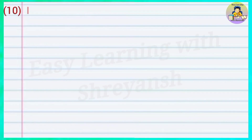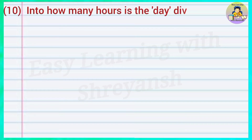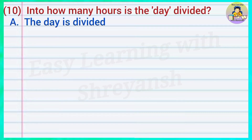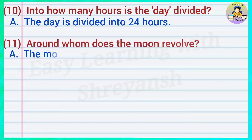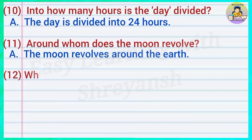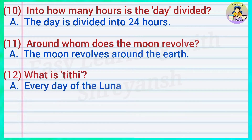Ten — into how many hours is the day divided? Answer: The day is divided into twenty-four hours. Eleven — around whom does the moon revolve? Answer: The moon revolves around the earth. Twelve — what is tithi? Answer: Every day of the lunar month is called tithi.